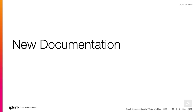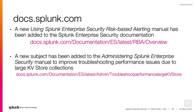Our final topic is the new documentation available for ES 7.1. A new Using Splunk Enterprise Security Risk-Based Alerting manual has been added to the Splunk Enterprise Security documentation at the link shown here. A new subject has also been added to the Administering Splunk Enterprise Security manual to improve troubleshooting performance issues due to large KV store collections. Please visit the link shown here.